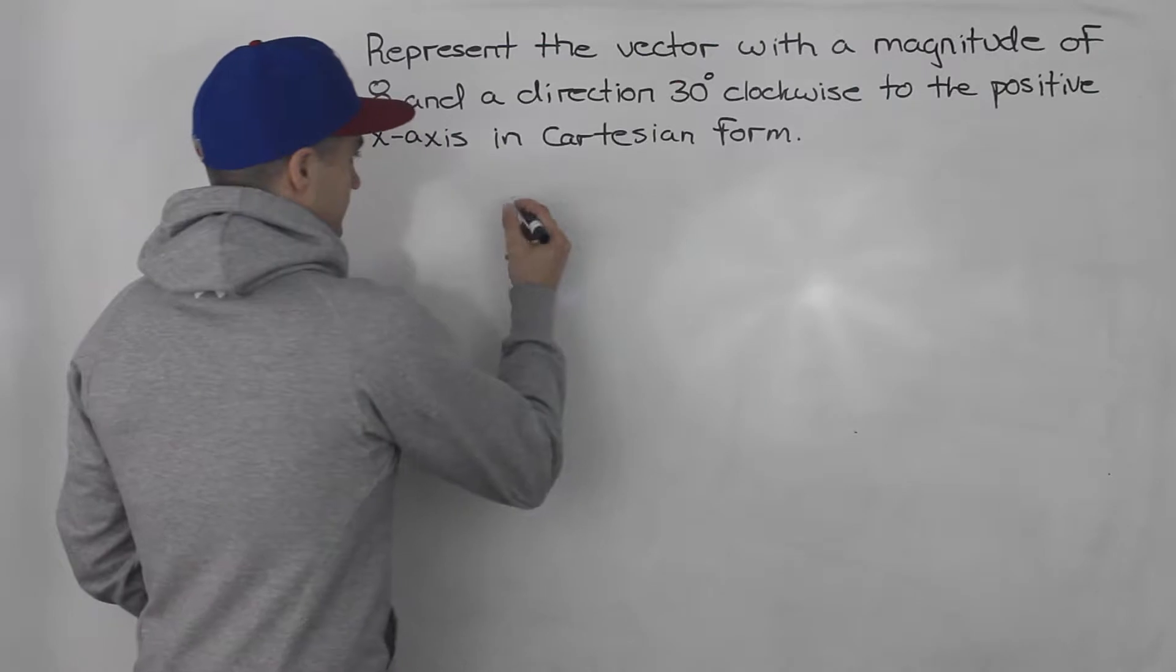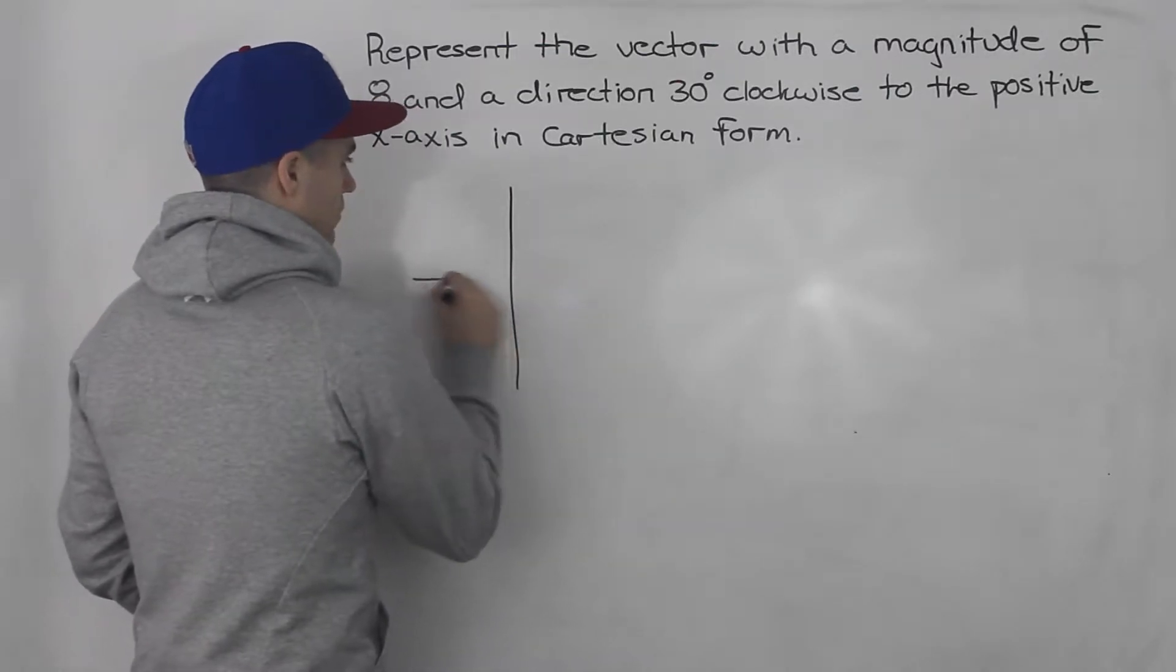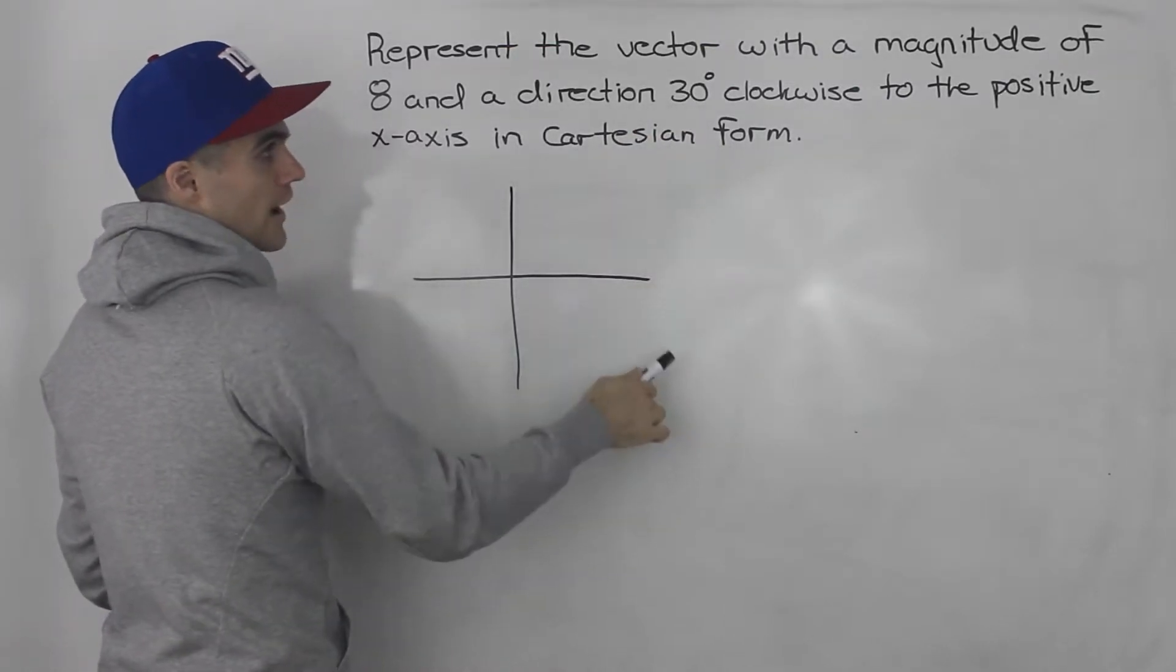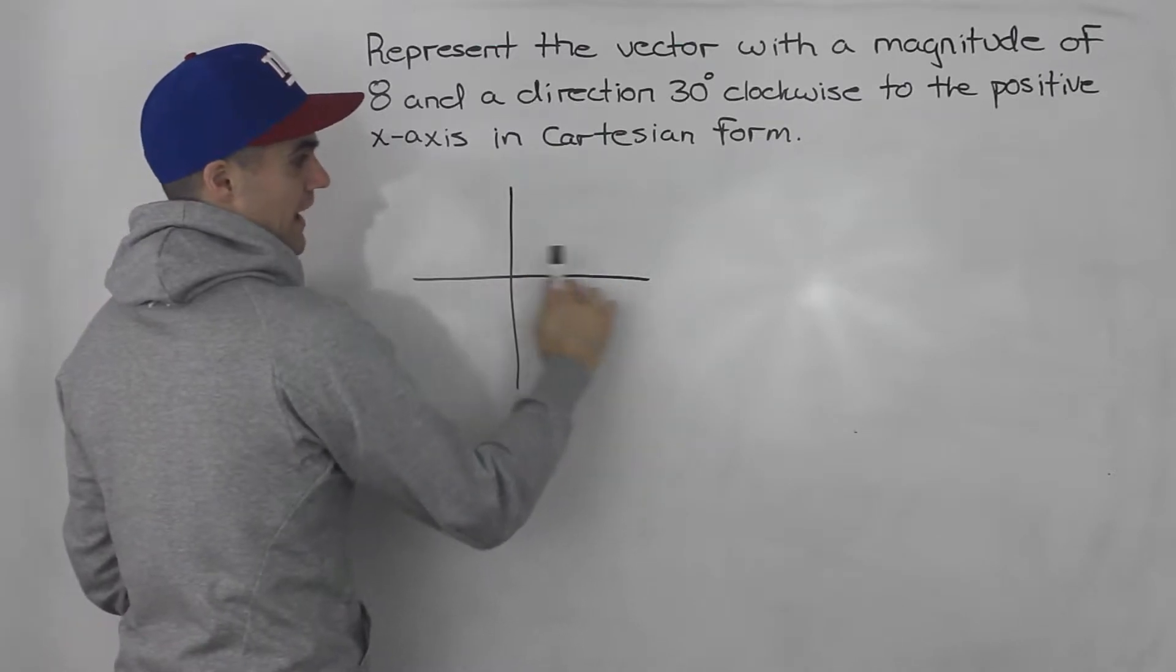So let's draw the Cartesian plane here. And we have a vector that has a magnitude of 8 and it's 30 degrees clockwise to the positive x-axis.